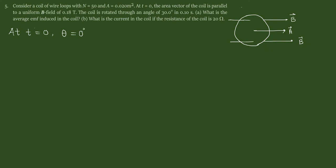And we have n of the coil 50 loops. Area is given 0.020 meters squared. And it's in magnetic field of 0.18 tesla.